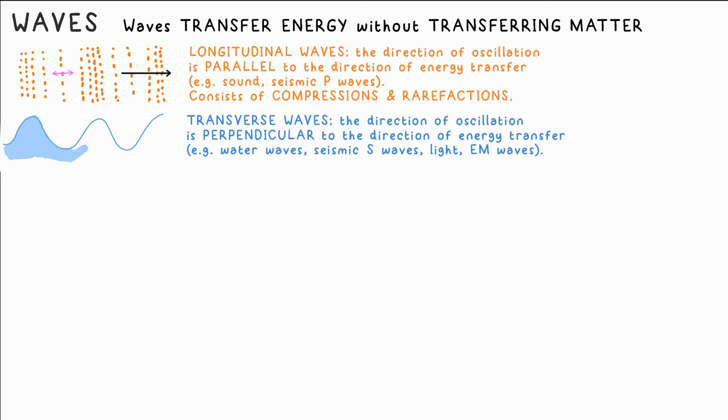Transverse waves are those in which the direction of oscillations is perpendicular to the direction of energy transfer. They wiggle side to side or up and down. Examples are waves on the surface of water, seismic S waves, secondary, they're slower than P waves, they produce earthquake aftershocks, and light and also every other EM electromagnetic wave too.